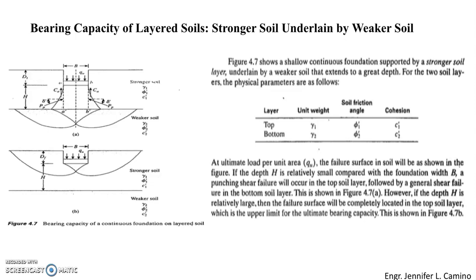The upper layer can be a stronger soil and the lower layer can be a weaker soil, or vice versa — the top layer is weaker and the lower layer is stronger. In such instances, the failure surface at ultimate load may extend through two or more soil layers, and determination of ultimate bearing capacity in layered soil can be made in only a limited number of cases. This section outlines the procedure for estimating bearing capacity for layered soils.